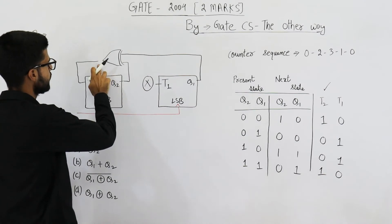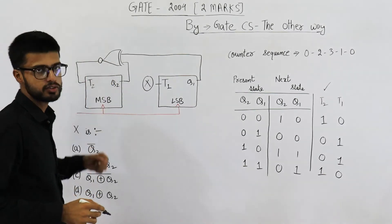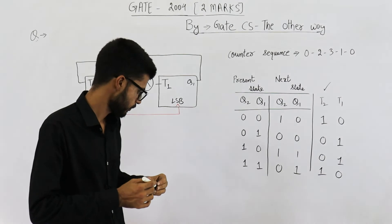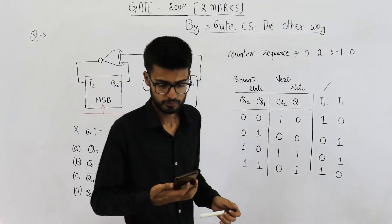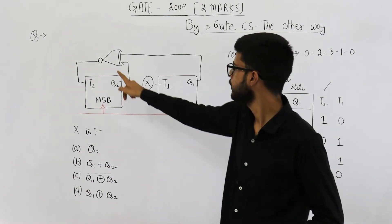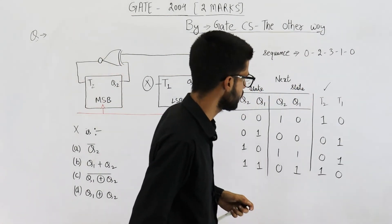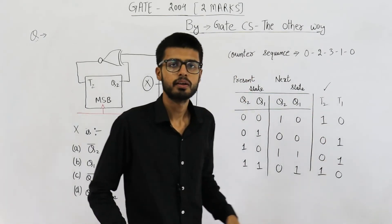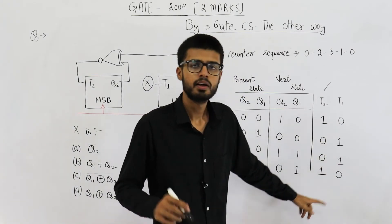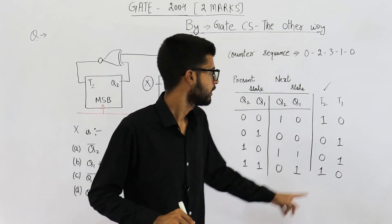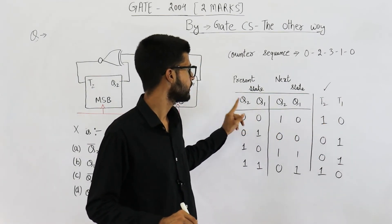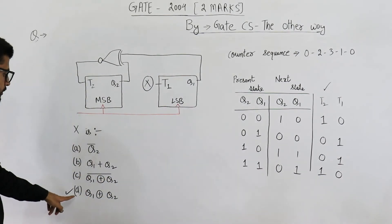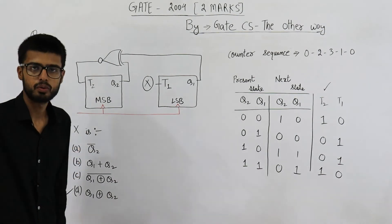By mistake an X-OR gate was drawn — it should be X-NOR. In the question it is indeed an X-NOR gate, so that small mistake is now corrected. T2 is X-NOR, and for T1 you can see the output pattern 0, 1, 1, 0 which is the truth table of an X-OR gate. That means T1 has to be X-OR of Q1 and Q2. So the value of X is Q1 XOR Q2, which corresponds to option D.